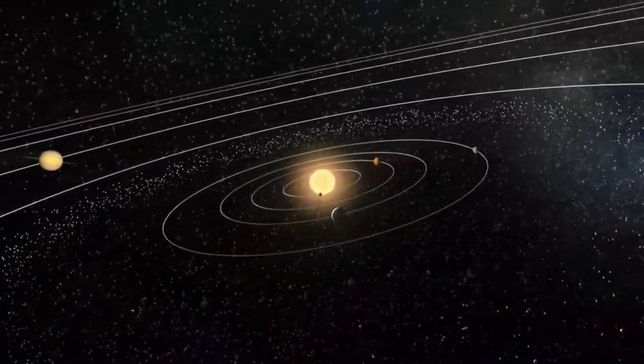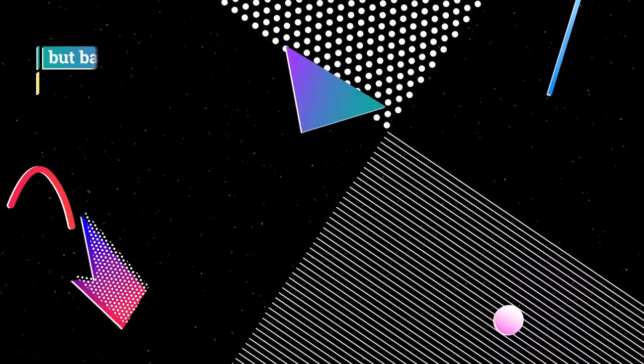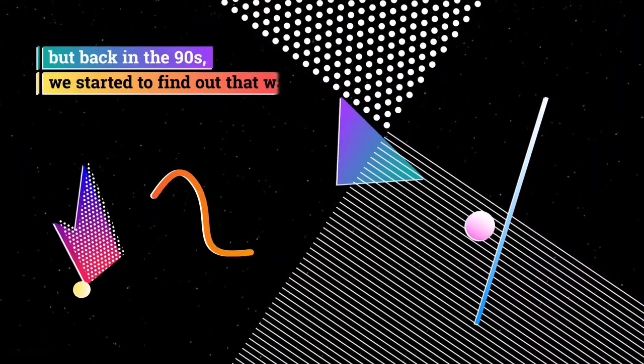And for a long time, we thought that's how all solar systems would look. But back in the 90s, we started to find out that wasn't true.